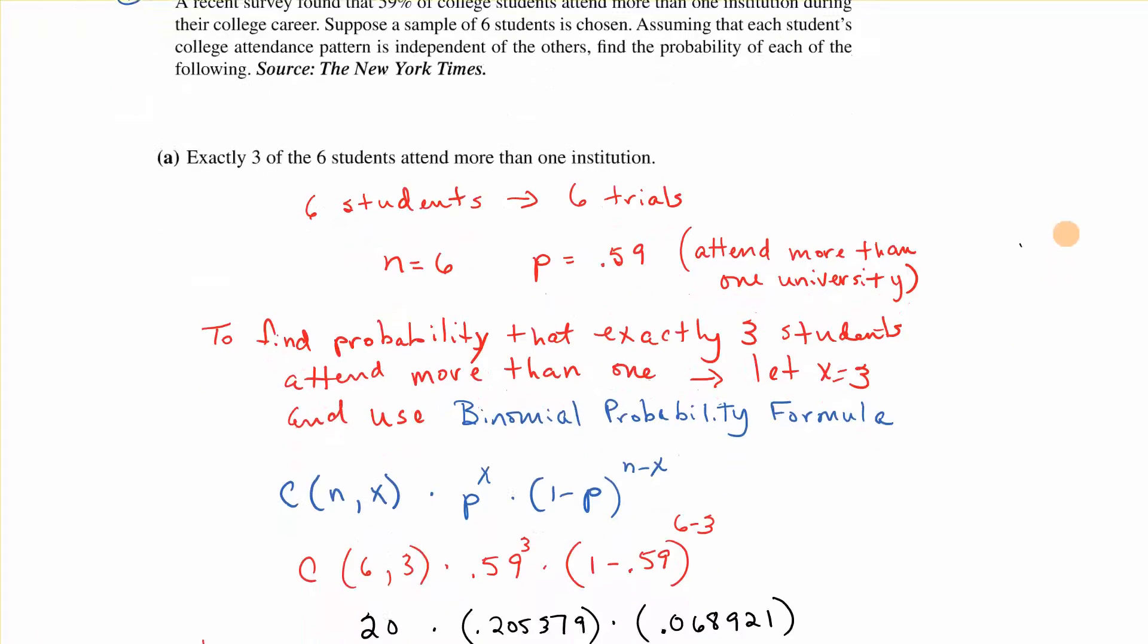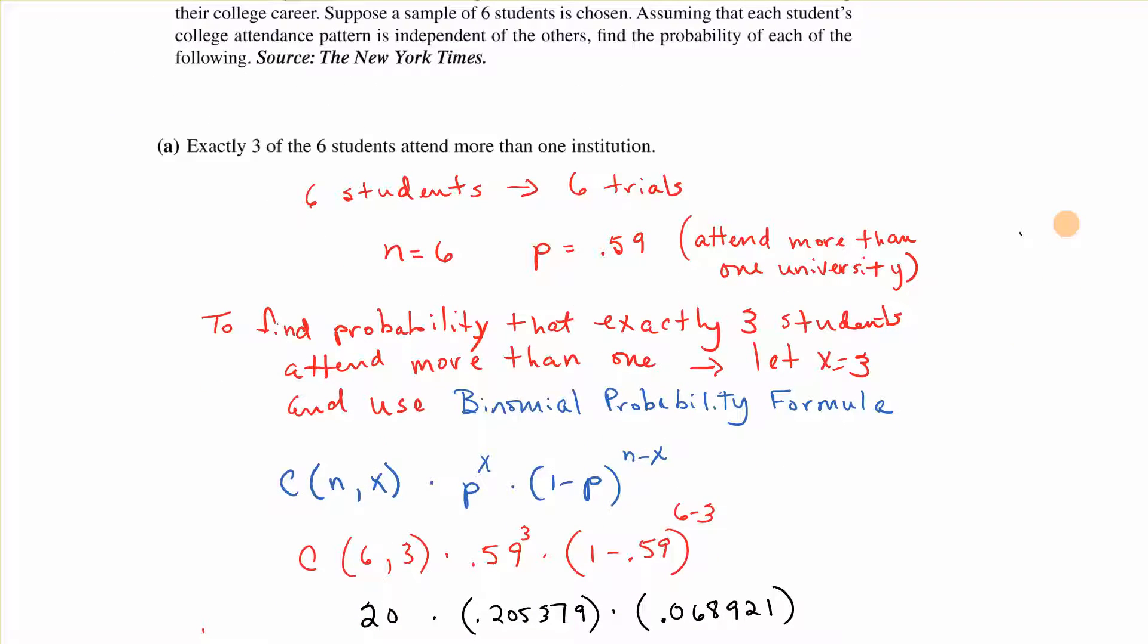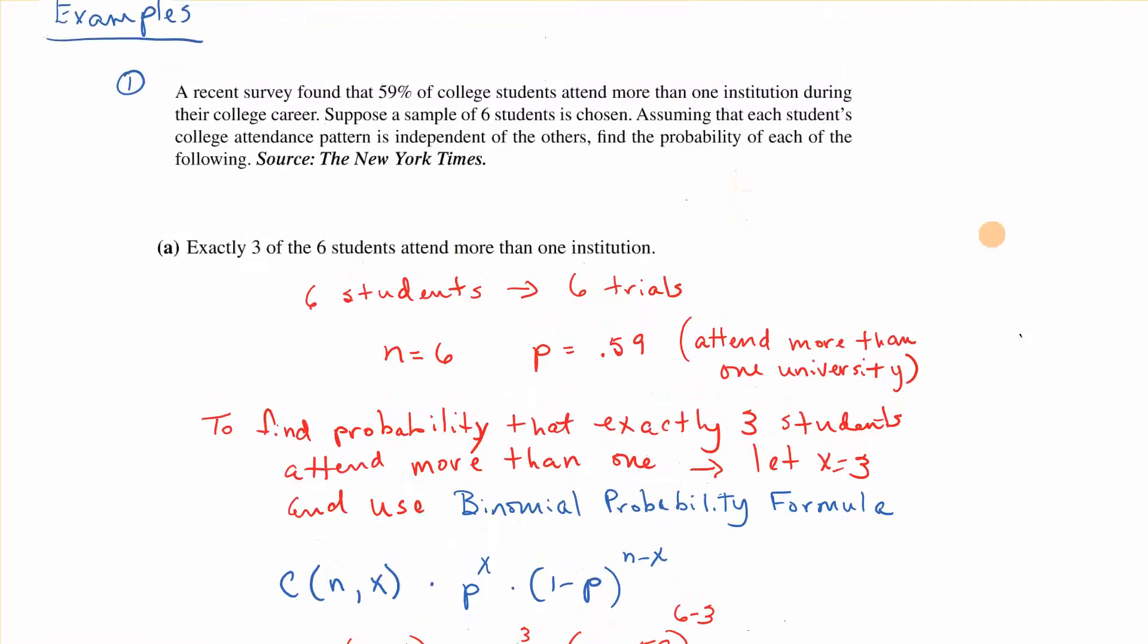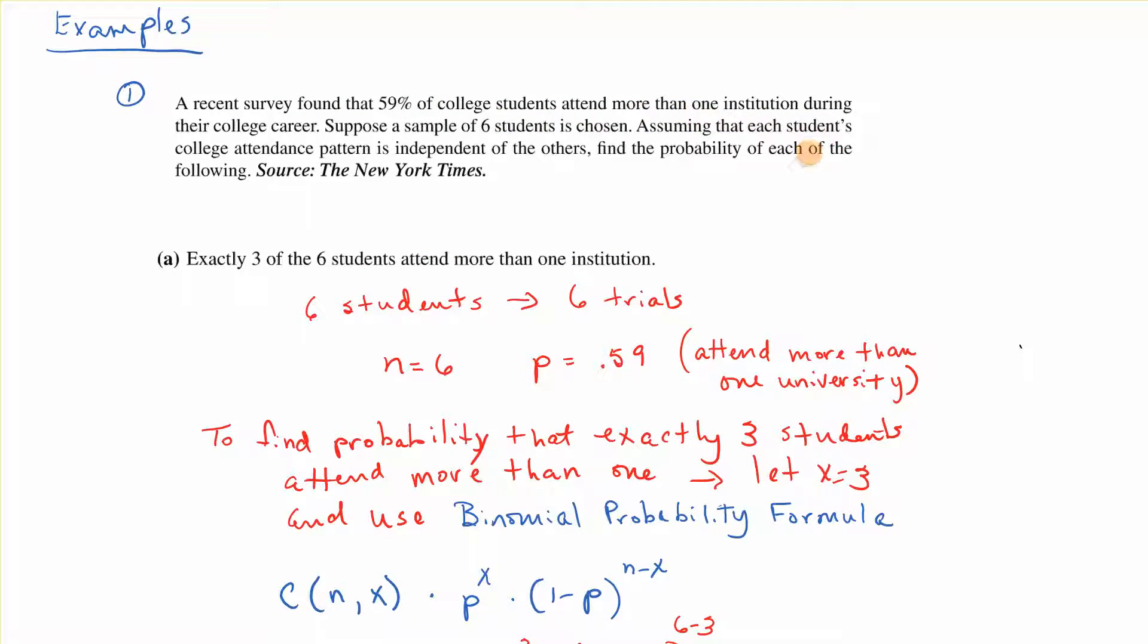The probability that exactly three of the six attend more than one institution. So you have six students, six trials, so that means N is six. The P is 0.59, that's the 59% that are going to attend more than one. To find the probability that exactly three students attend more than one, let X equal 3 and use the formula.